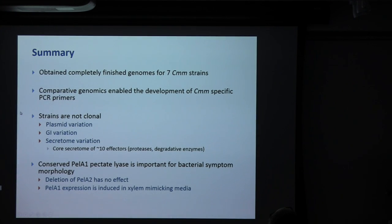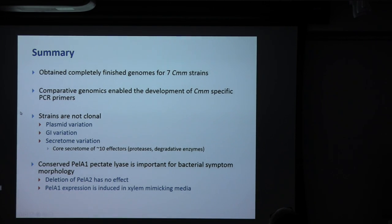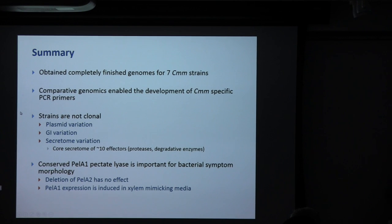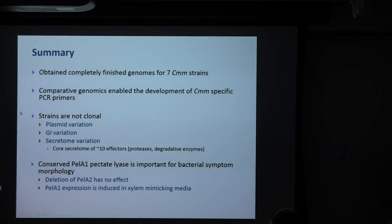To summarize: we have completely finished genomes for about seven CMM strains using PacBio, used those to develop specific PCR primers, and established that these strains are not clonal — there's variation in plasmid composition, genomic islands, and secretome. There are about 10 core secreted proteins from Clavibacter. We started to investigate a subset of these secreted proteins for their role in bacterial virulence. The conserved pectate lyase PELA1 is important for bacterial symptom morphology, but deletion of the closely related PELA2 has no effect, likely because it's not robustly expressed during infection.